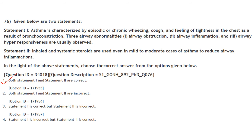Asthma is characterized by episodic or chronic wheezing, cough and tightness in the chest due to bronchoconstriction. Three airway abnormalities are observed: airway obstruction, airway inflammation and airway hyper-responsiveness. Inhaled and systemic steroids are used even in mild-to-moderate cases to reduce airway inflammation. Both statements 1 and 2 are correct. Answer is option 1.